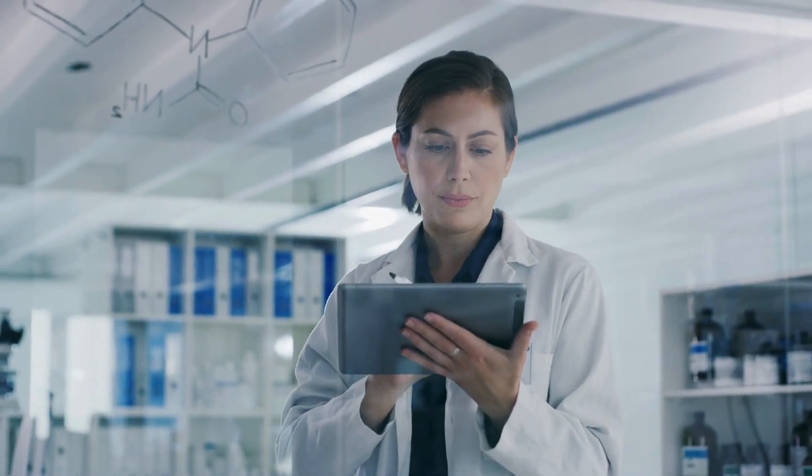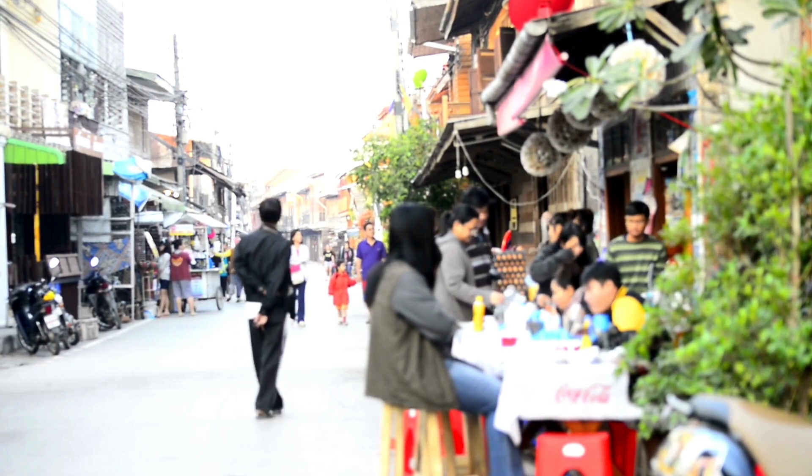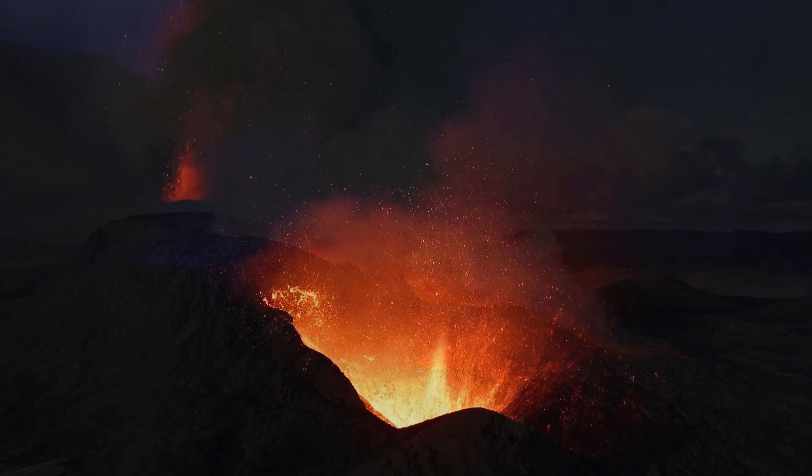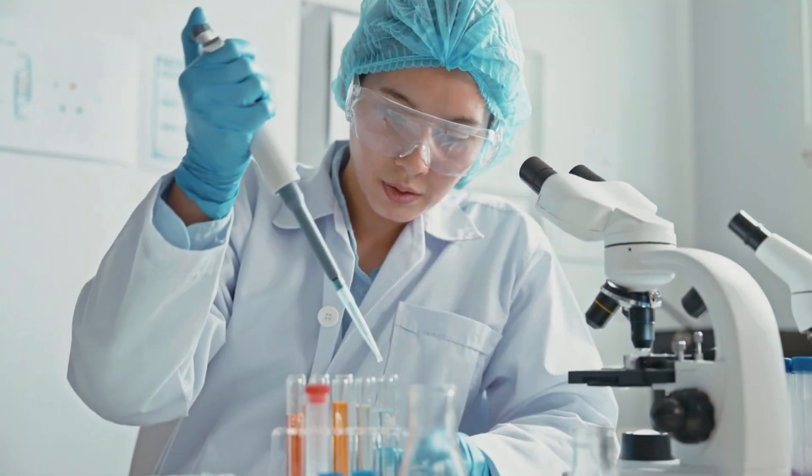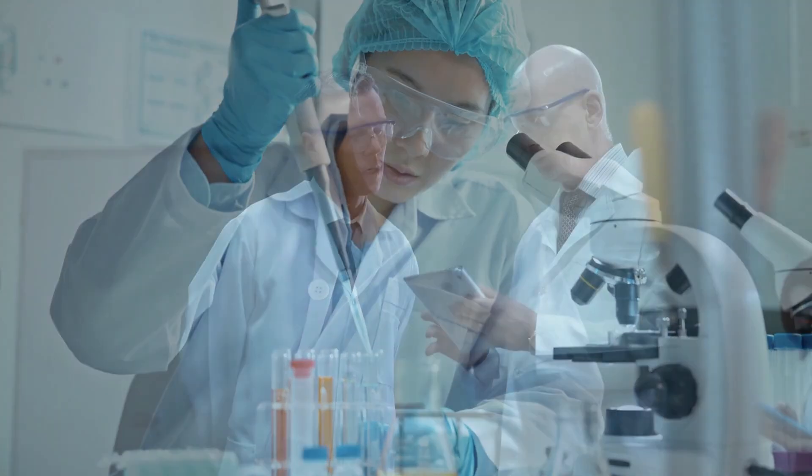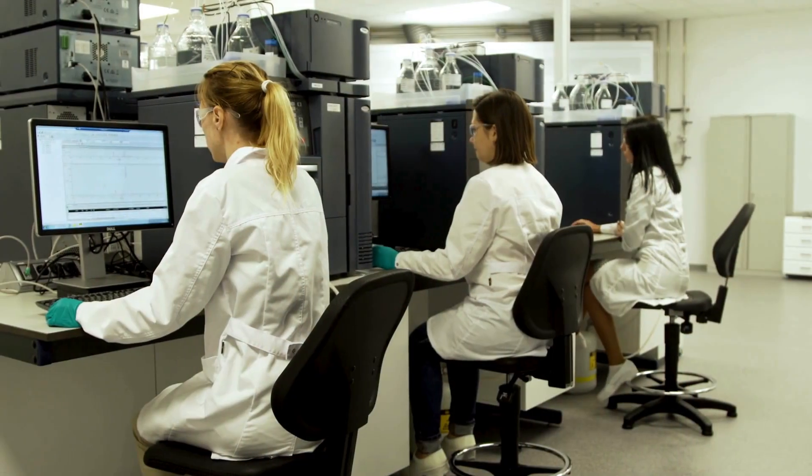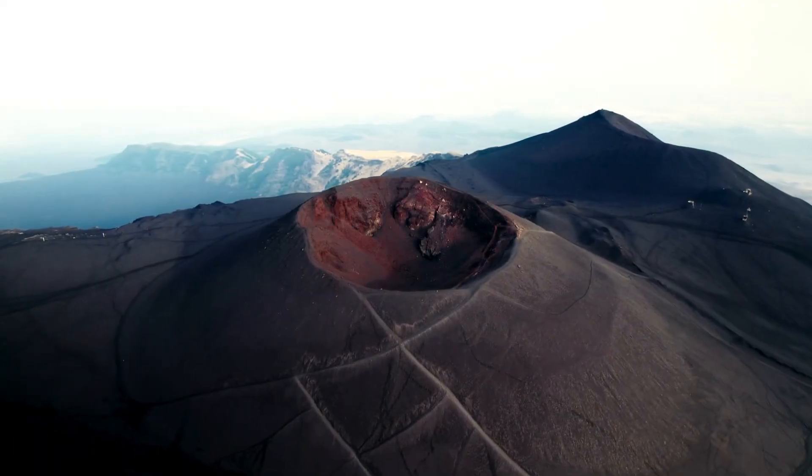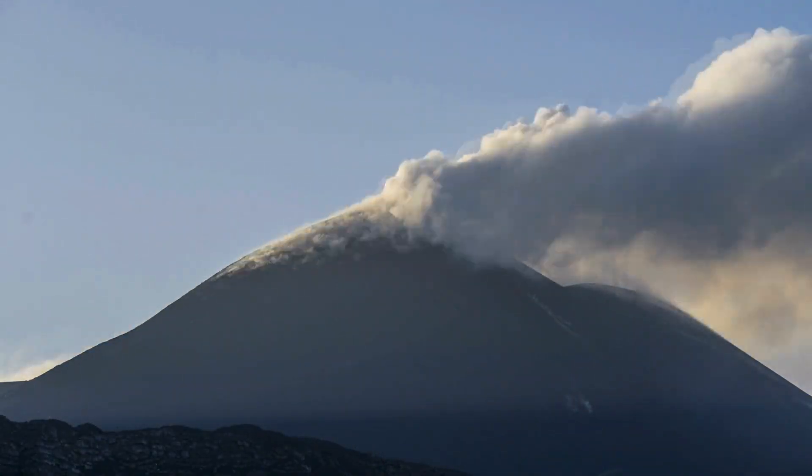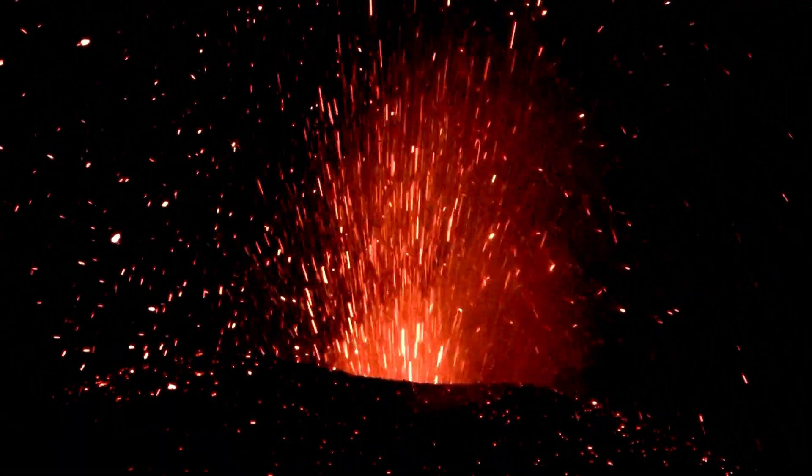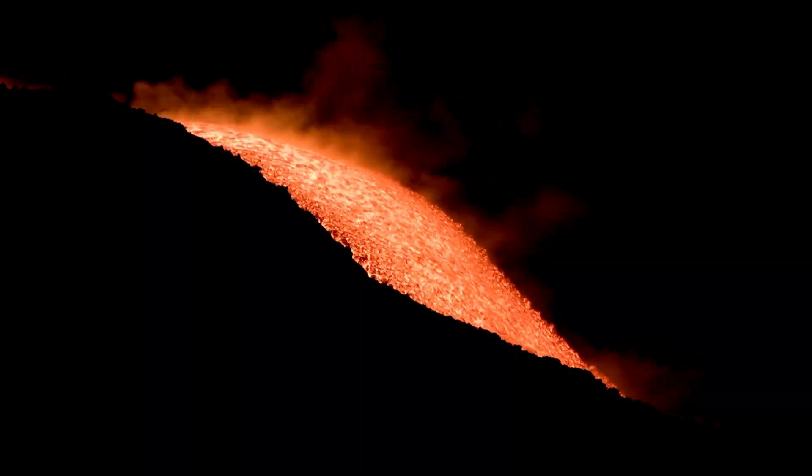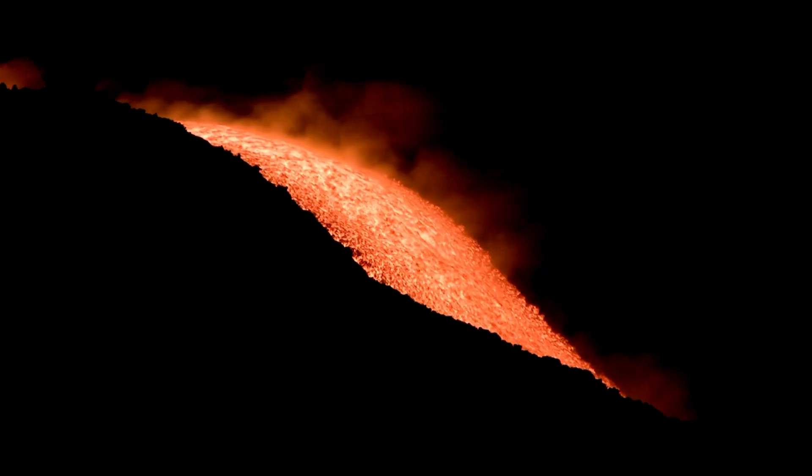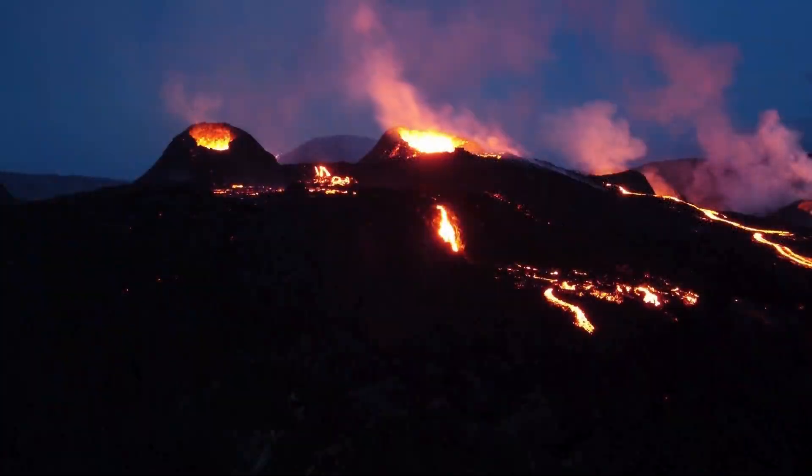In Ethiopia's Afar Depression, Erta Ale's persistent lava lake radiates heat from a tectonic rift, surrounded by sodium carbonates, halite, and potash formed from evaporated volcanic brines. These resources support agriculture and industry, while the rift's activity hints at deeper, undiscovered deposits. In Papua New Guinea, Lihir Island's submarine volcanic system powers the Lihir Gold Mine, one of the world's richest epithermal gold deposits. Here, gold is entwined with pyrite and quartz, alongside tellurium and antimony, critical for semiconductors and solar technology. The mine harnesses geothermal energy, blending volcanic power with sustainable innovation.